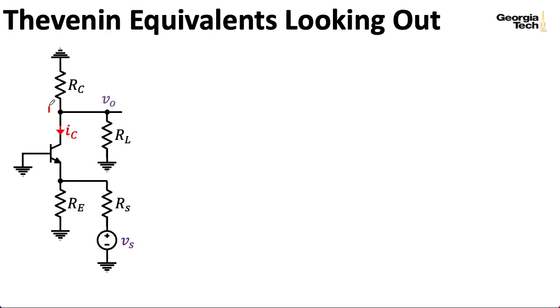So we're going to use a Norton equivalent looking into the collector to figure out the gain and the output impedance. And we're going to use a Thevenin equivalent looking into the emitter to figure out the input impedance. And in order to use those equivalents, we're going to need some Thevenin equivalents looking out of the terminals. So the Norton equivalent associated with looking into the collector is going to need Thevenin equivalents looking out of the base and out of the emitter. And the Thevenin equivalent looking into the emitter is going to need the Thevenin equivalent looking out of the base.